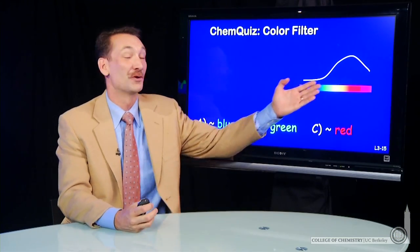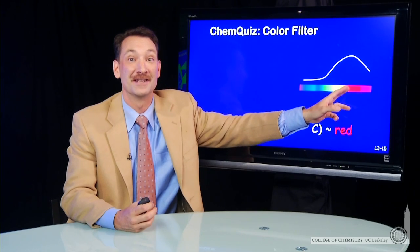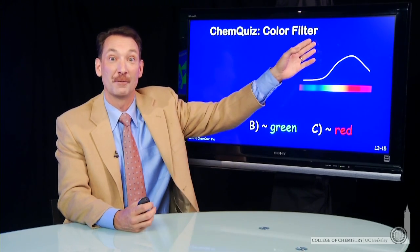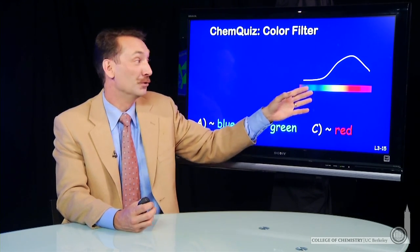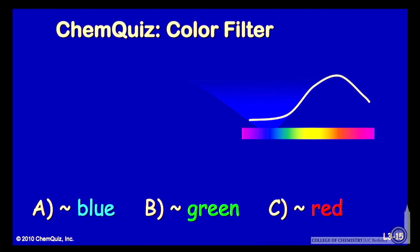An object that has an absorption spectrum that looks like this is absorbing strongly in the reds and the yellows and passing wavelengths in the blue. So blue wavelengths will pass through, strike your eye, and this object will appear blue.